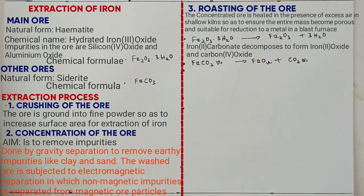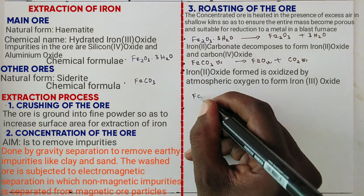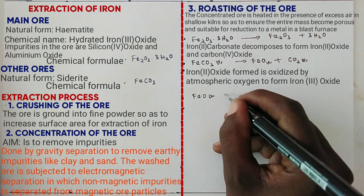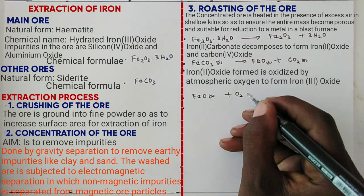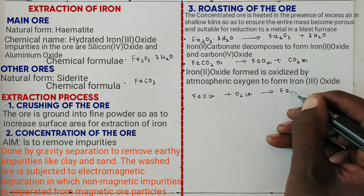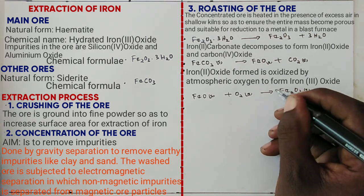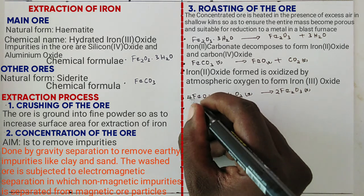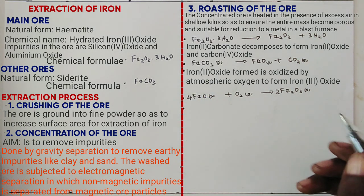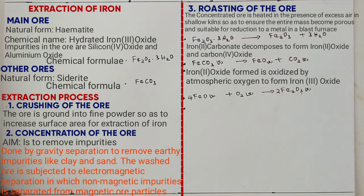The iron(II) oxide formed is then oxidized by atmospheric oxygen to form iron(III) oxide, as shown in the equation: 4FeO (solid) plus O2 (gas) gives 2Fe2O3. To balance the equation, place 4 on FeO and 2 on Fe2O3; oxygen is balanced because 2×3=6 and 4+2=6.